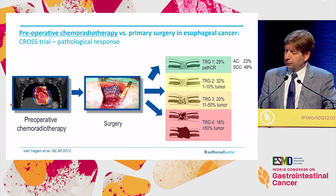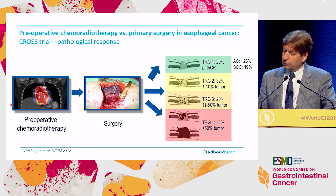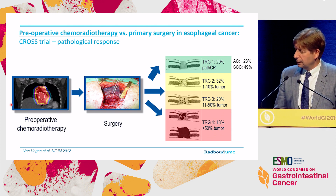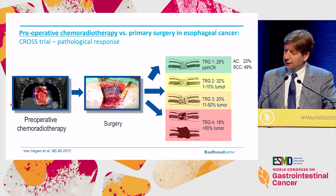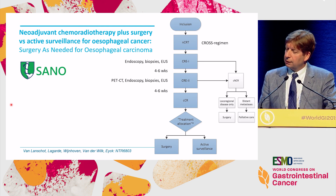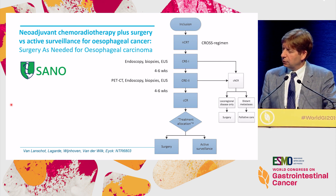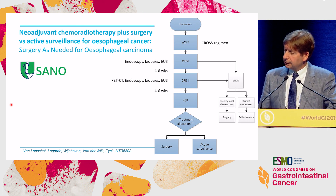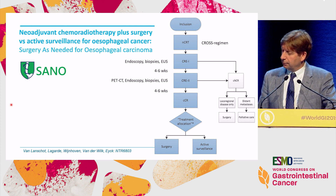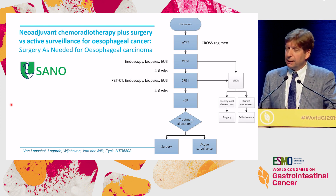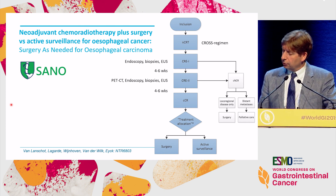Why is this important? In the CROSS trial — a trial in esophageal cancer with a small subset of GEJ junction tumors — a significant proportion of patients, around 30%, did reach a pathological complete remission. The question is whether surgery is even necessary in these patients. Several trials are ongoing addressing that question, one example being the SANO trial in the Netherlands. Patients receive the CROSS regimen and are then clinically evaluated repeatedly by endoscopy, biopsies, and EUS. If there is an ongoing clinical complete response, patients are ultimately allocated to undergo surgery or active surveillance.